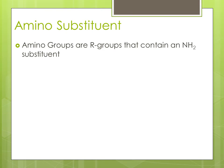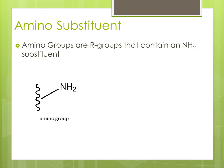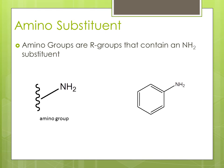Amino groups are R-groups that contain an amino substituent. Here's an amino group being used — the resulting molecule is known as aniline.